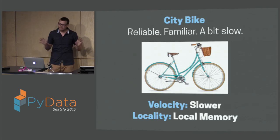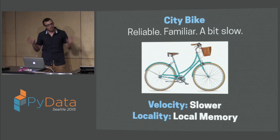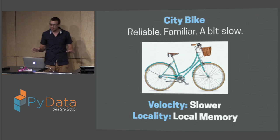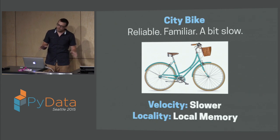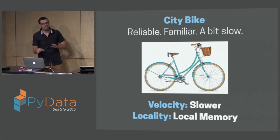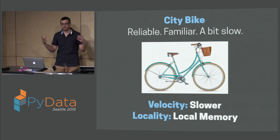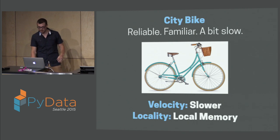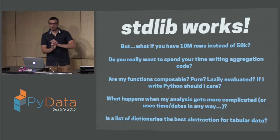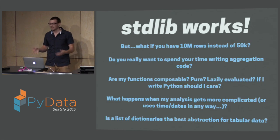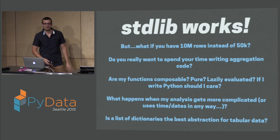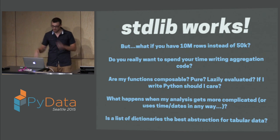CPython is like your city bike — it's reliable, it's familiar, maybe a little bit slow. The velocity is a little slower, and locality-wise you're working in memory, just working in plain Python. The standard library works — you can actually do a lot of very useful things in Python and people have been doing it for about 30 years.